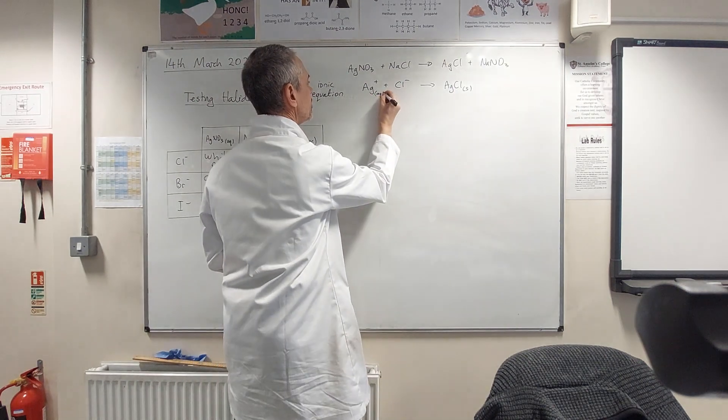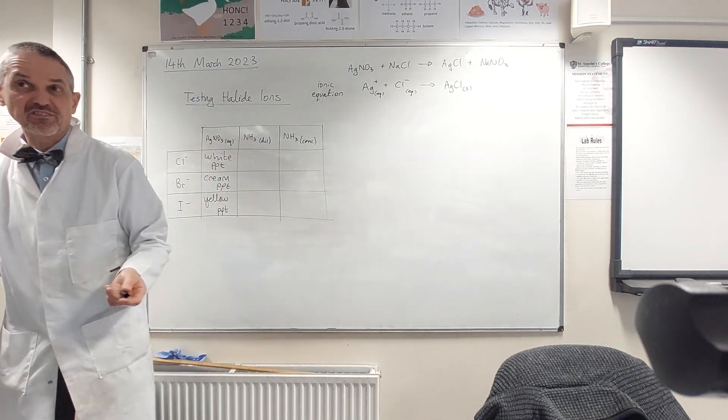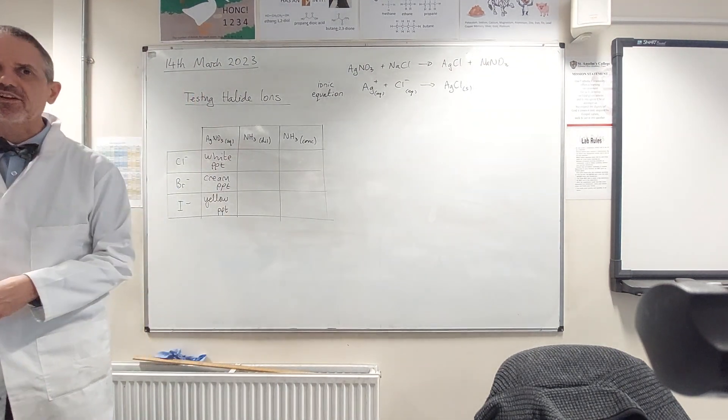And usually you'd put state symbols in an ionic equation just because the product is a different state. You're making a solid from two solutions.